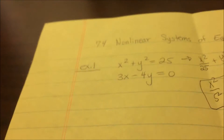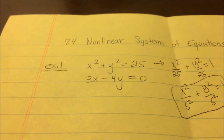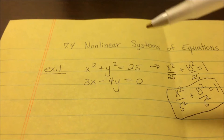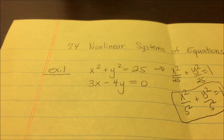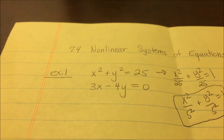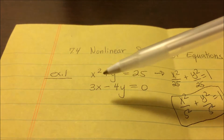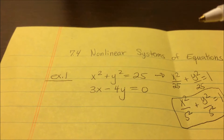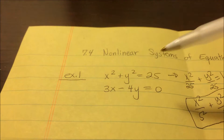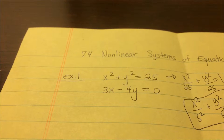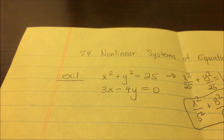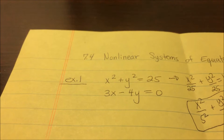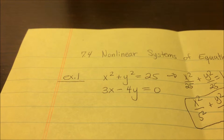Now we graph the other equation: 3x minus 4y equals 0. That's definitely a linear equation — no squared terms. If one variable were squared, it'd be a parabola. If both are squared with a plus sign in between, it's a circle or ellipse; with a minus sign, it's a hyperbola. Recognizing these equation forms makes it much easier to graph.